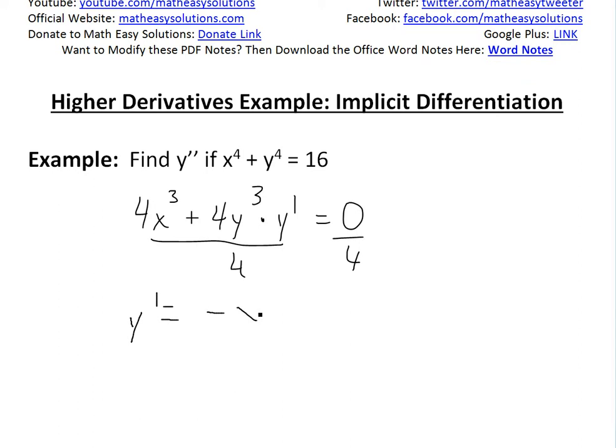So we'll get y' equals, bring this over, negative x^3. The 4's cancel, then divide this out by y^3 here.